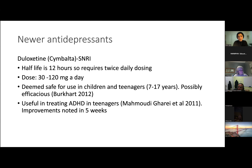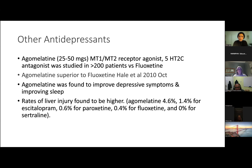There are newer antidepressants such as duloxetine, with a half-life of 12 hours — useful also in people with chronic pain, and some have said it is helpful in treatment of ADHD because it increases dopamine in the frontal lobe. Agomelatine works on the melatonin-1 and melatonin-2 receptors and is a 5-HT2C antagonist. Some studies have shown it is better than fluoxetine, and it mainly improves sleep, but it's not very often used because of concerns about liver injury and the need to monitor liver function in the first 8 to 10 weeks of treatment.